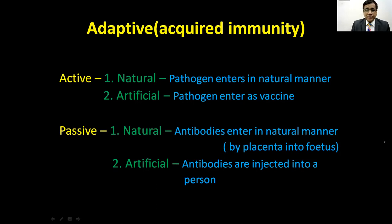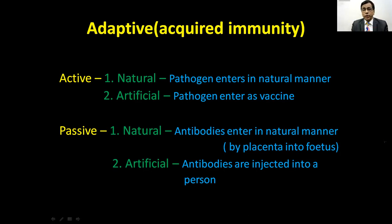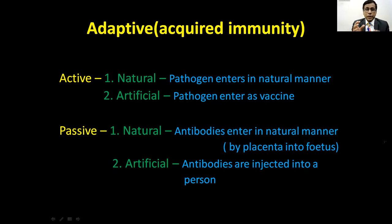Another type is passive immunity, which is also natural or artificial. Natural passive immunity is when antibodies enter naturally — for example, from the mother to the fetus through the placenta. Artificial passive immunity is when antibodies are directly injected into a person. When we give antibodies directly to the patient, we call it passive artificial immunity. This is very important to understand.